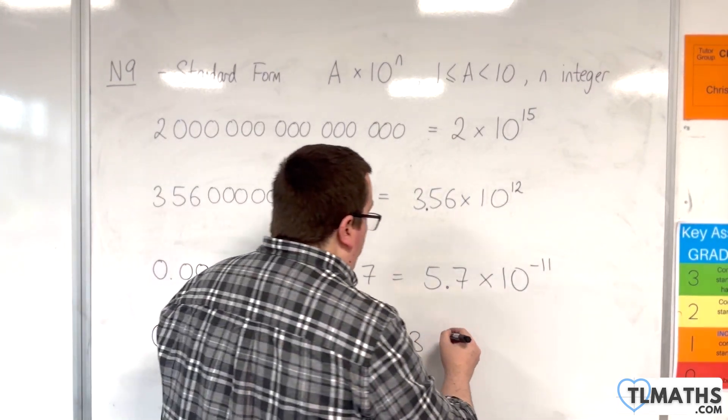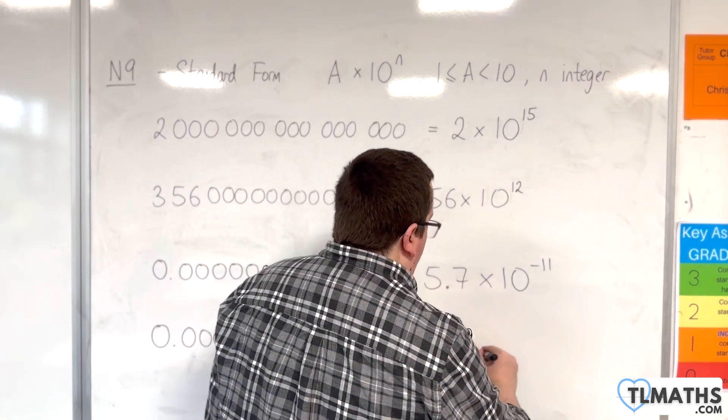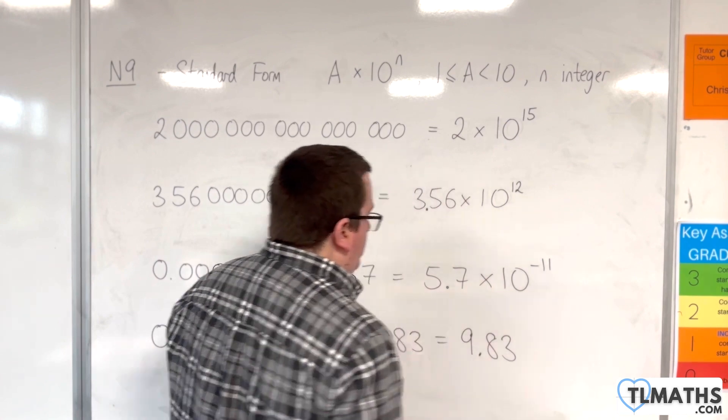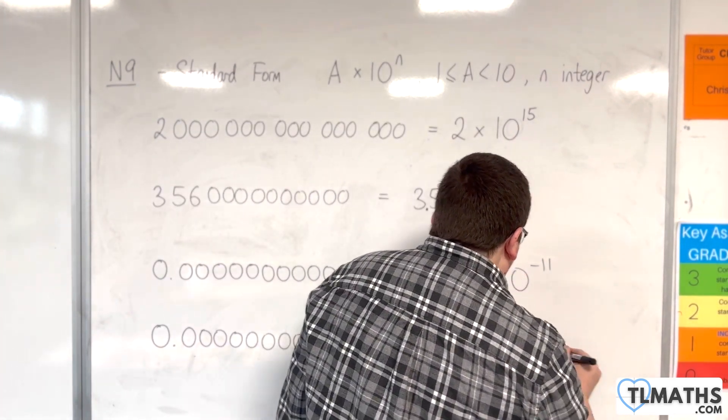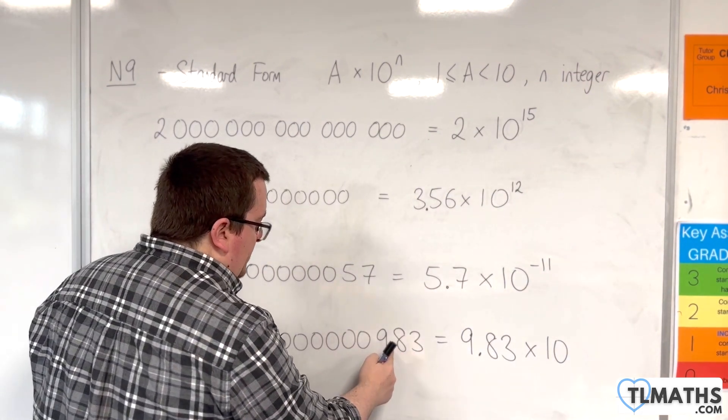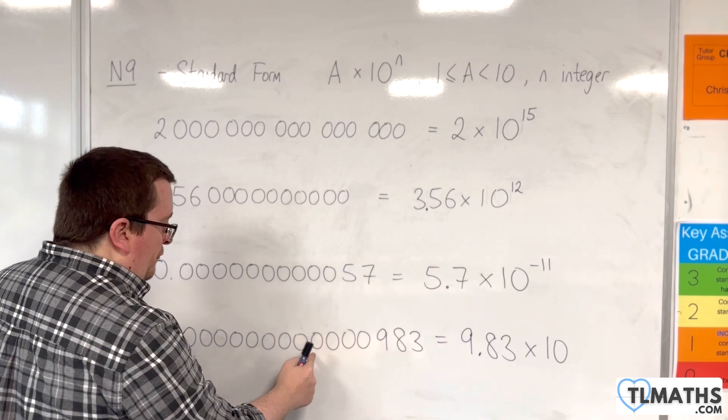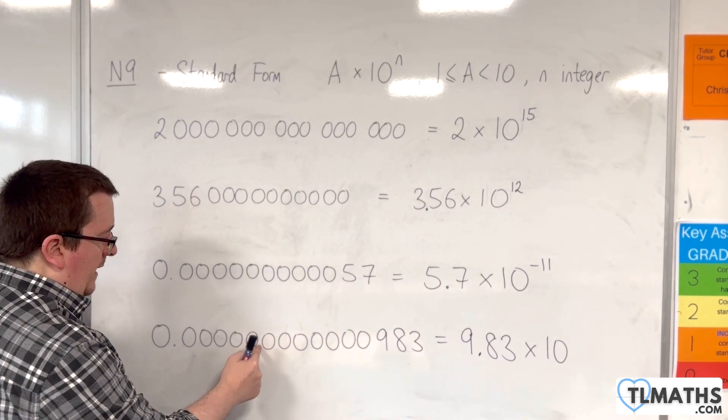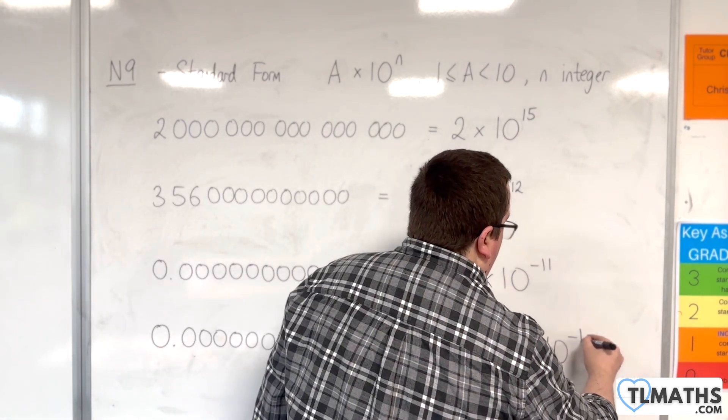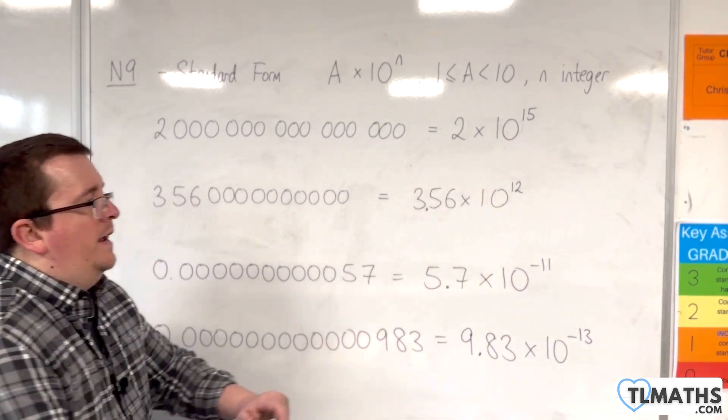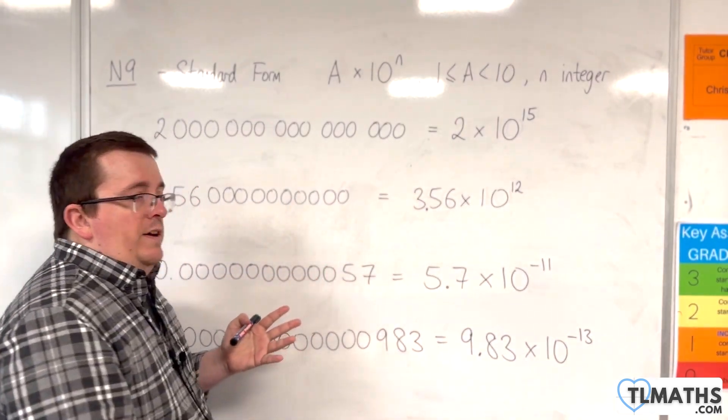Likewise, for our fourth example, we've got 9, 8, 3 here. So we would use 9.83. That's between 1 and 10. Times by 10 to the power of... If the decimal point's there, it needs to go 1, 2, 3, 4, 5, 6, 7, 8, 9, 10, 11, 12, 13. So that's how we can write it in standard form.